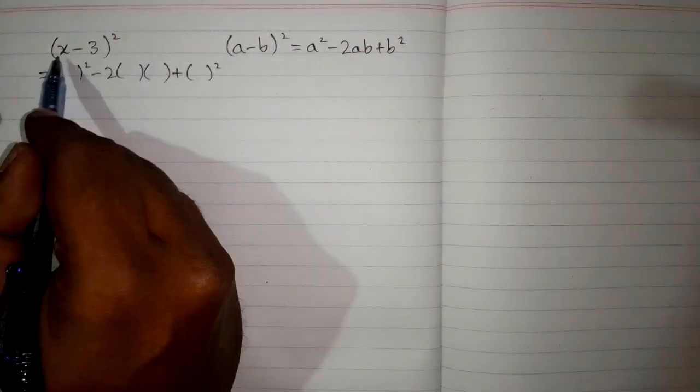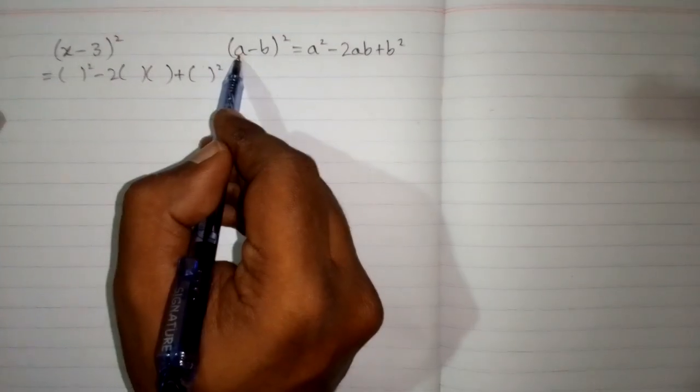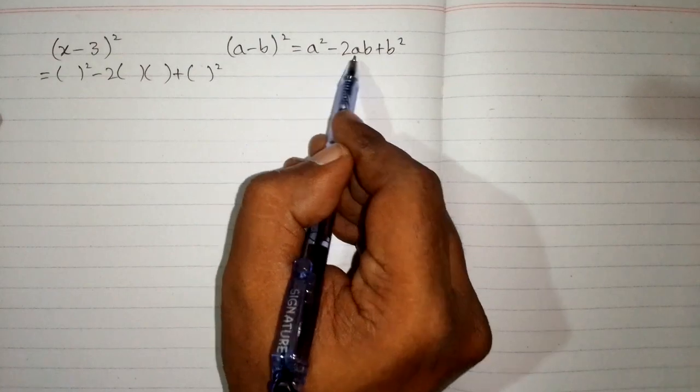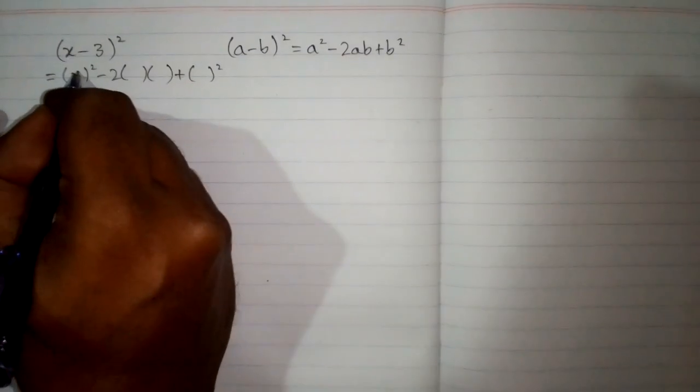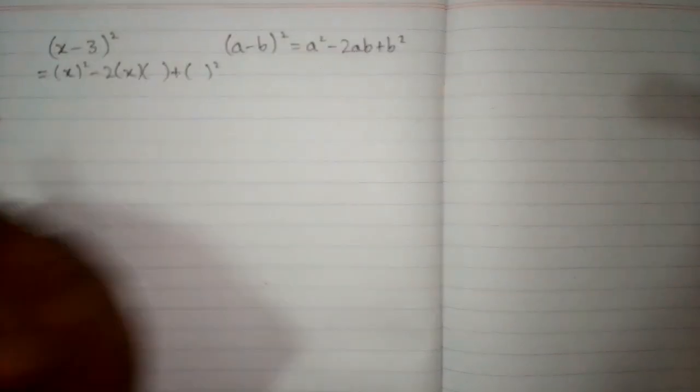Now we can see that we have x in place of this a. So we will put x over here and over here.